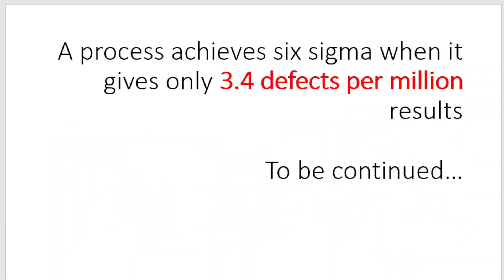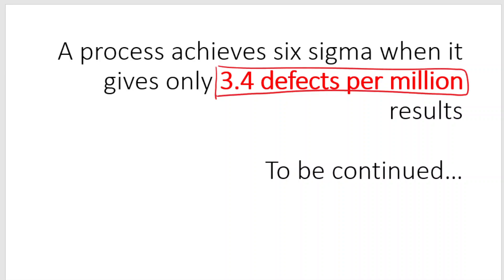Any process achieves Six Sigma when it gives only 3.4 defects per million test results. Only when a process gives 3.4 defects per million test results is it said to have achieved Six Sigma. In the next video, I will be telling you about various applications of Six Sigma and how to measure success using Six Sigma and Lean methodology. Thank you.